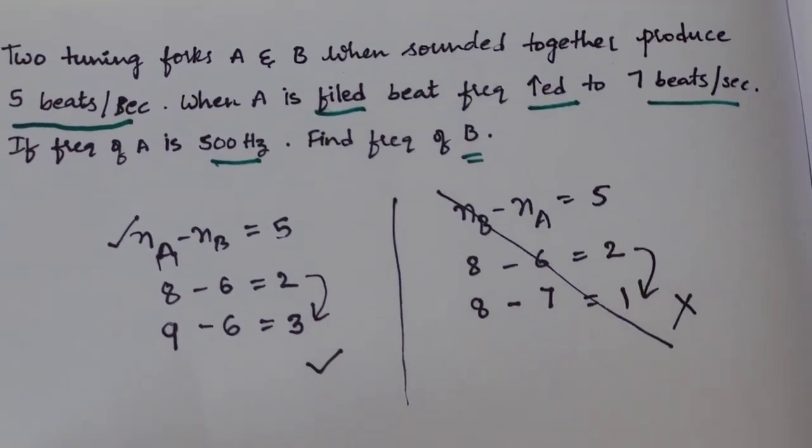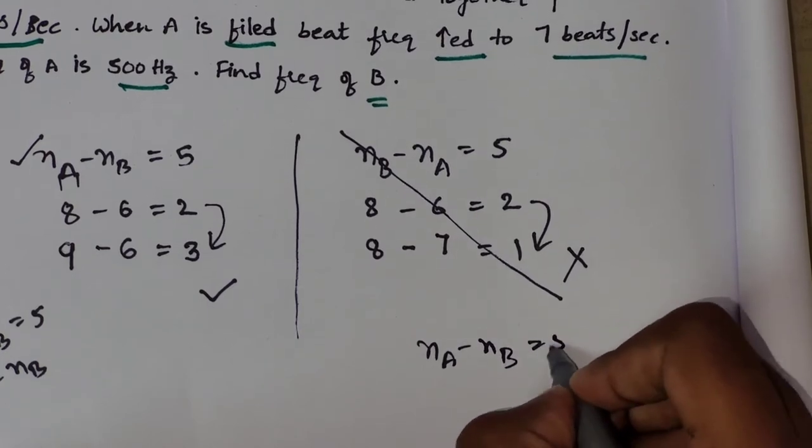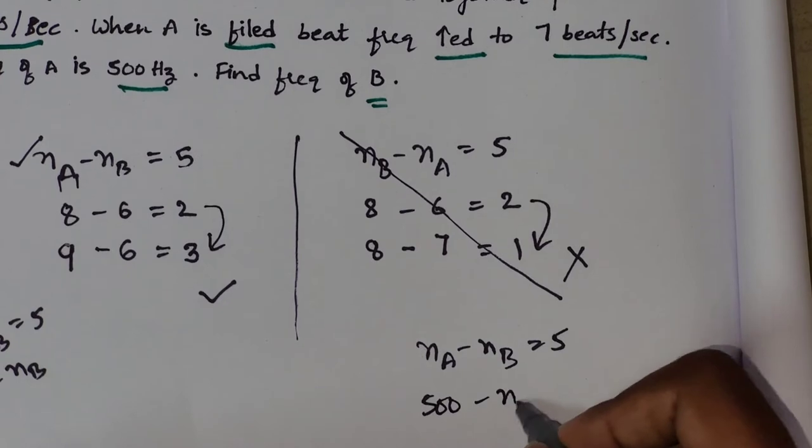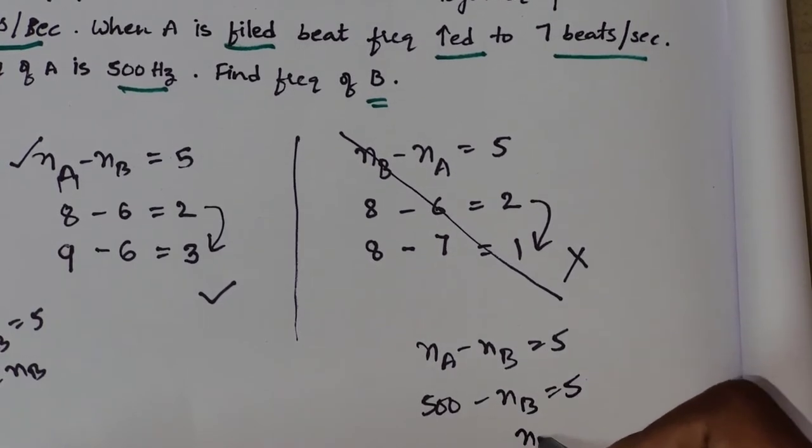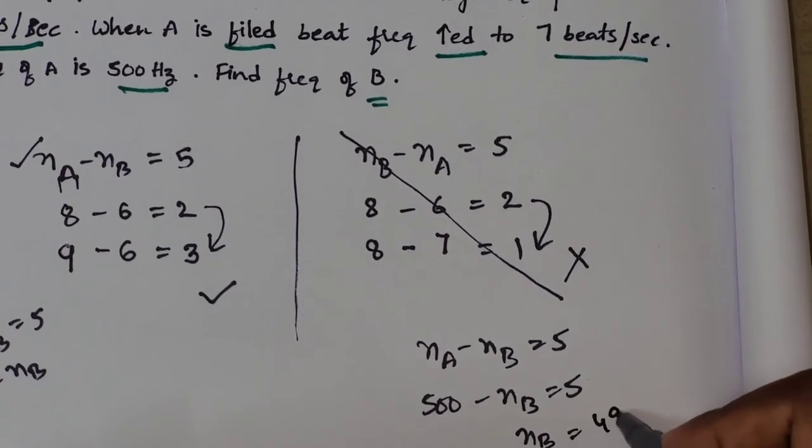So, let us find out the frequency of B. NA minus NB equal to 5. NA given as 500 minus NB equal to 5. NB becomes 500 minus 5 that is 495.